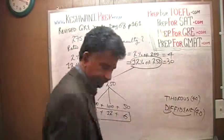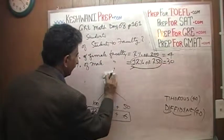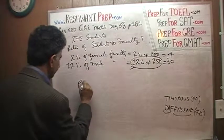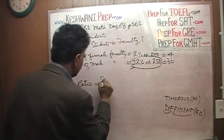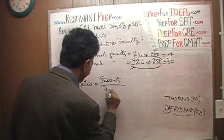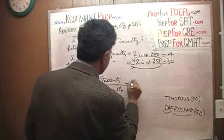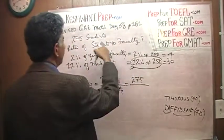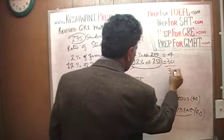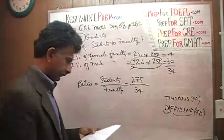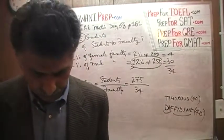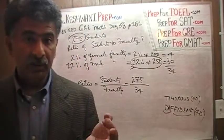So the ratio that we're looking for, the ratio that we're looking for, is students to faculty, which is 275 the students, 275 to 34.